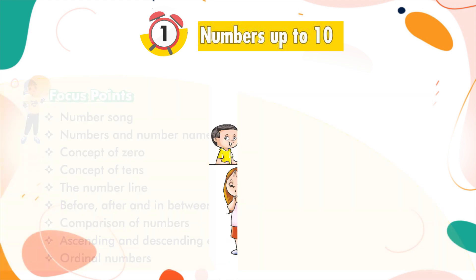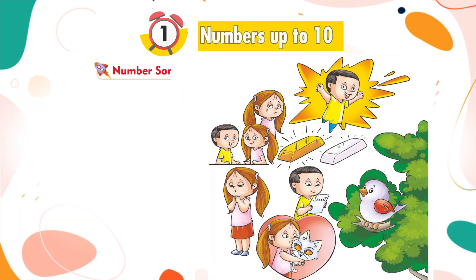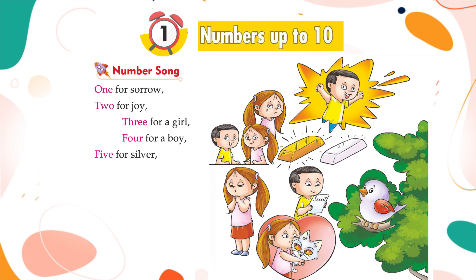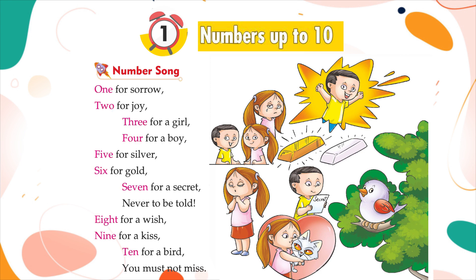Ordinal numbers. Number song: 1 for sorrow, 2 for joy, 3 for a girl, 4 for a boy, 5 for silver, 6 for gold, 7 for a secret never be told, 8 for a wish, 9 for a kiss, 10 for a bird you must not miss.